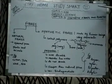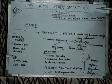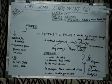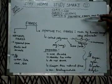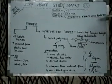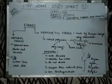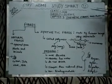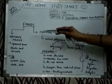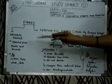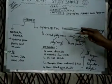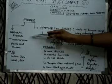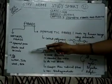Hello students, today we will study about science chapter 3: synthetic fibers and plastic. As we have already studied in the previous class, there are two types of fibers: natural fibers and synthetic fibers. Natural fibers are obtained from plants.